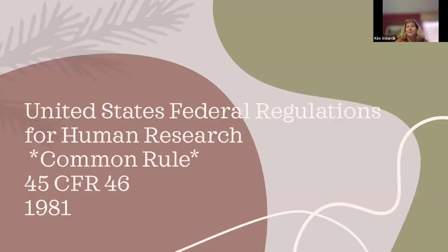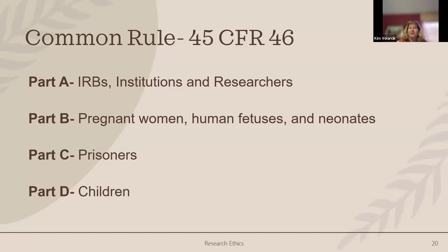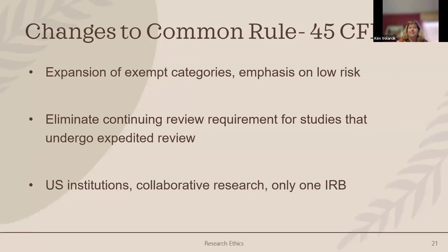The Common Rule, also known as the federal regulations for human research, is composed of Part A — the rules and regulations for the IRB, the institution, and researchers to follow. Part A also includes what the study team and PI are expected to do. There are three subparts covering vulnerable populations: Part B covers pregnant women, human fetuses, and neonates; Part C covers prisoners; and Part D covers children.